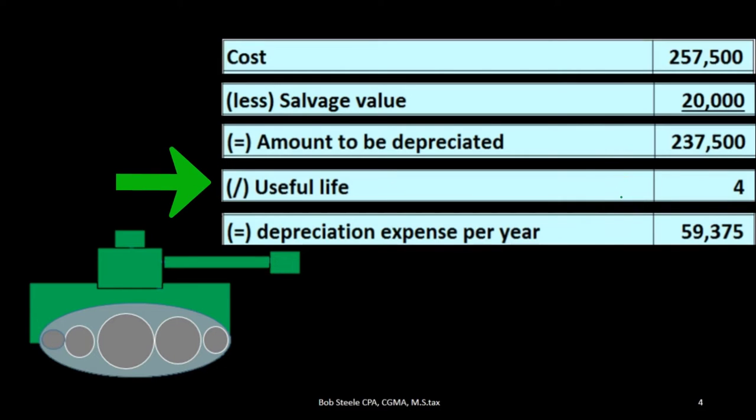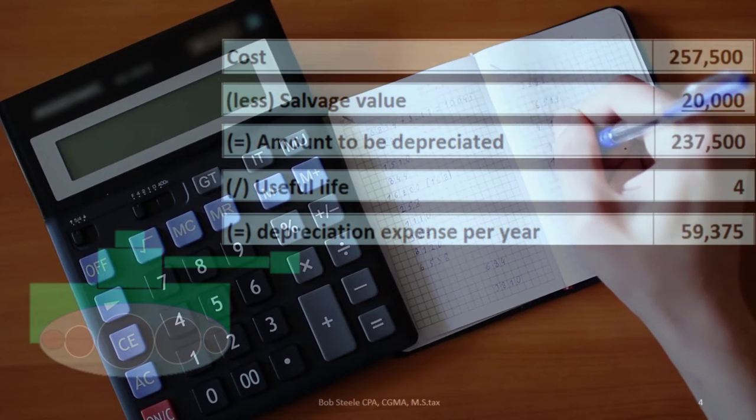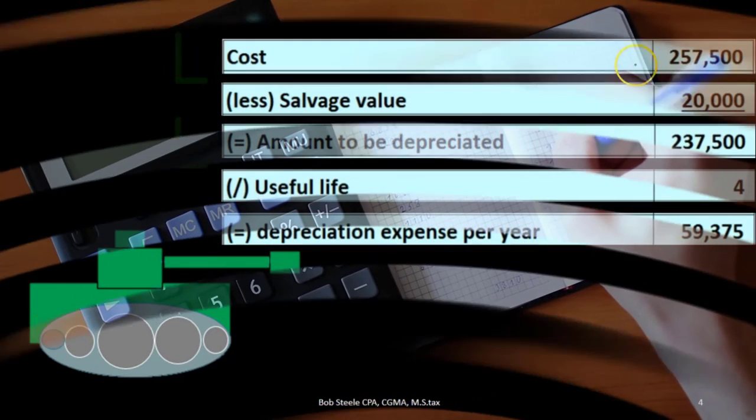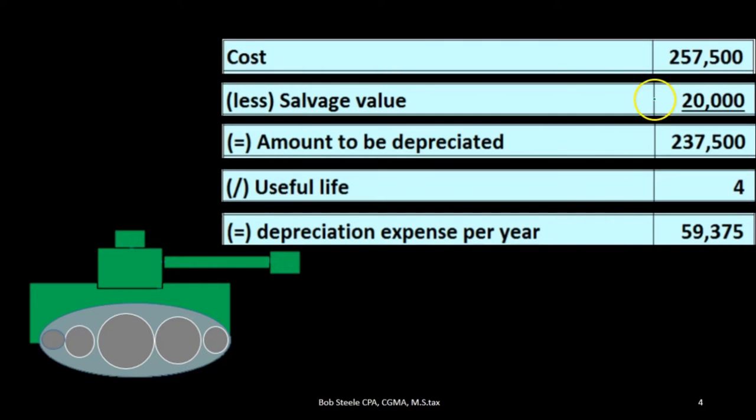This will result after four years in accumulated depreciation of $237,500, leaving us with a book value calculated at cost minus the accumulated depreciation at the end of four years of the salvage value of $20,000.